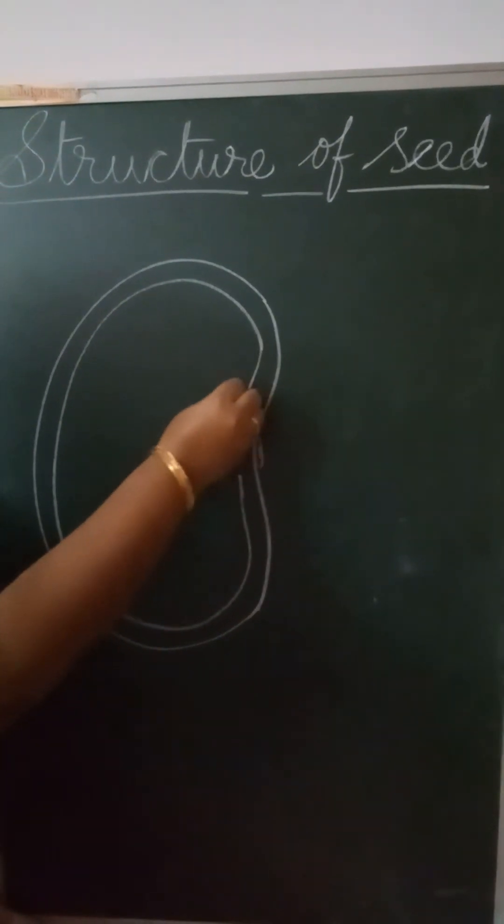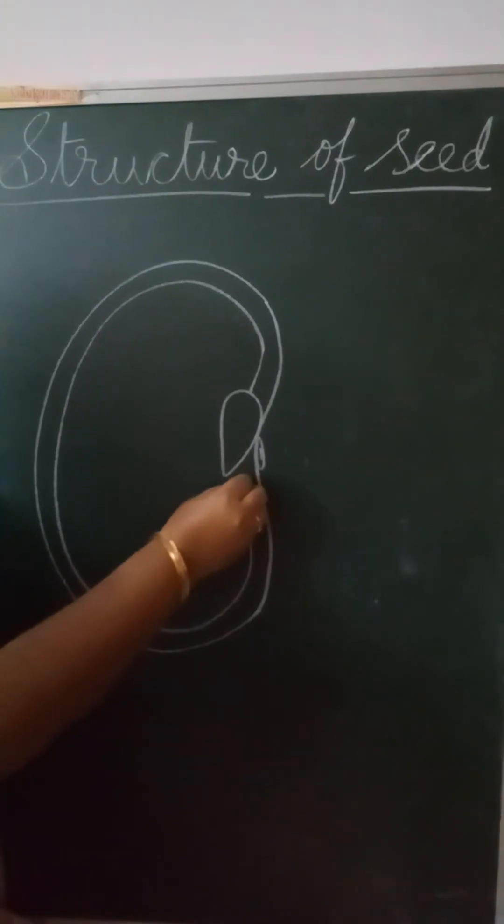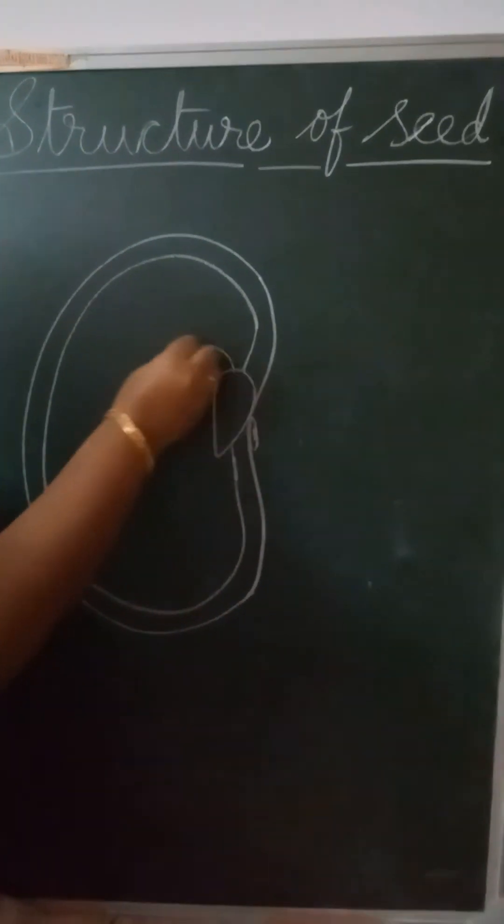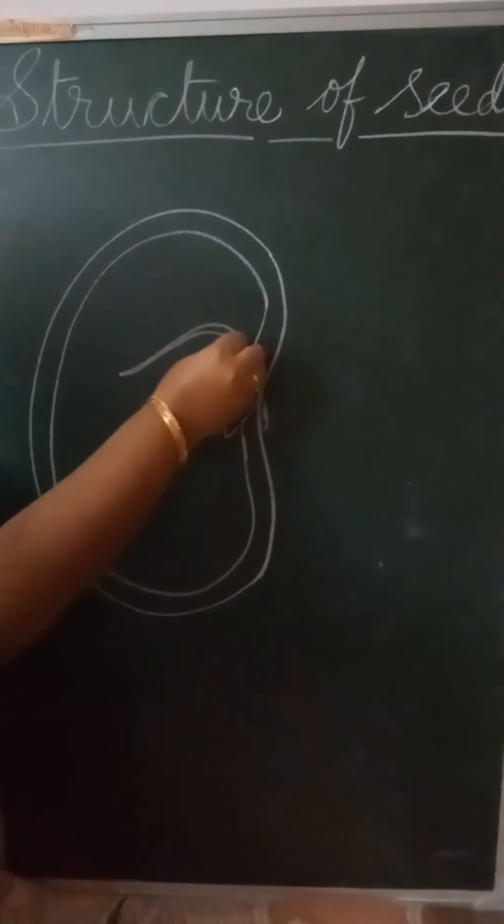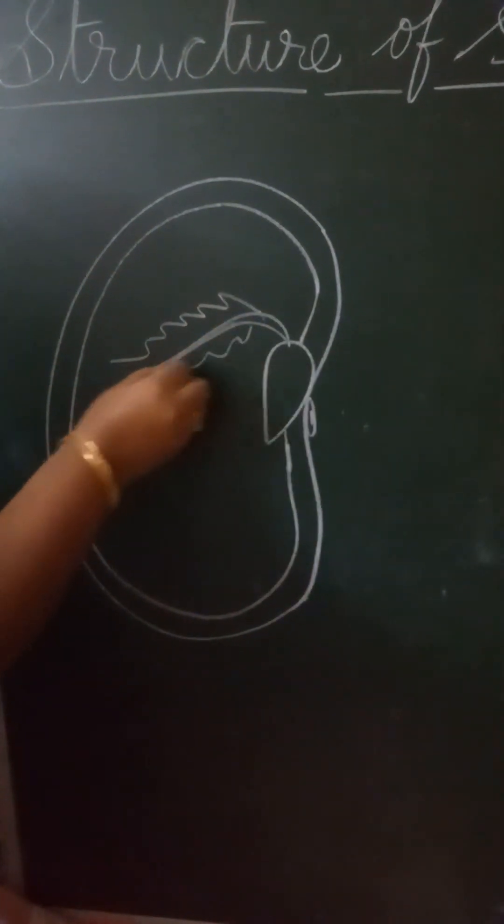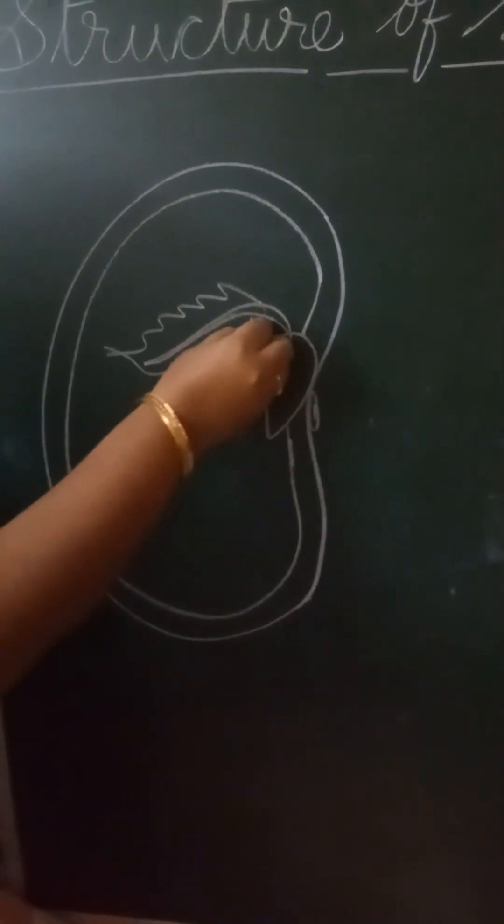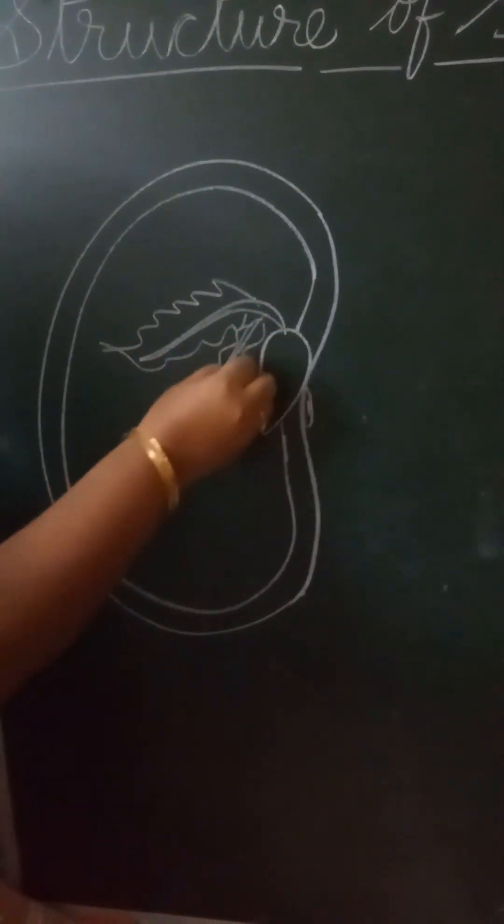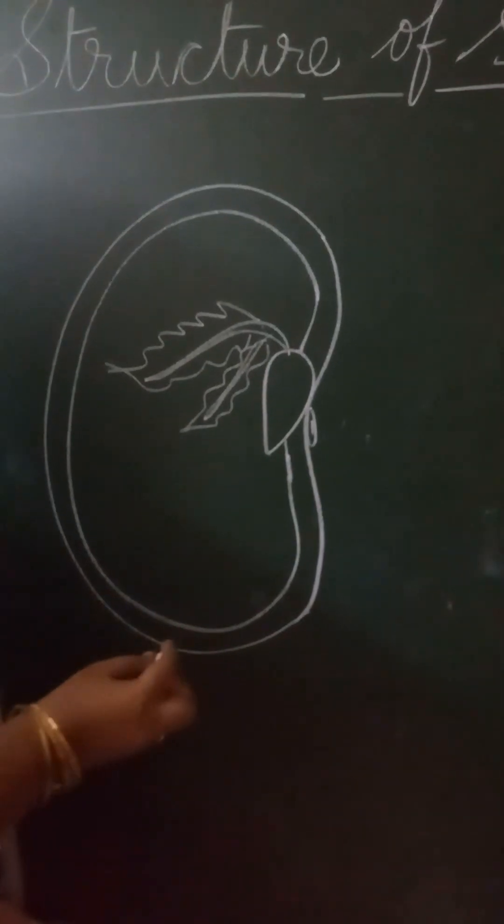This is embryo which is present inside it and the baby plant growing out of that. The leaves of that. One more leaf I will draw. That's it. Your diagram is finished.